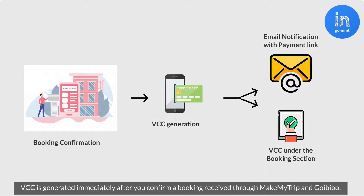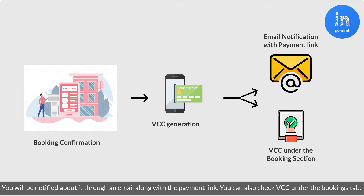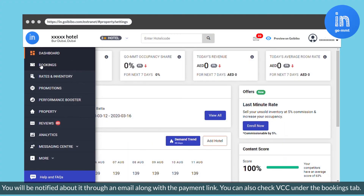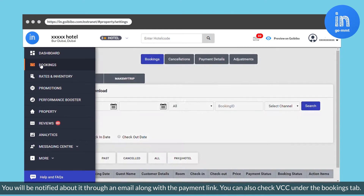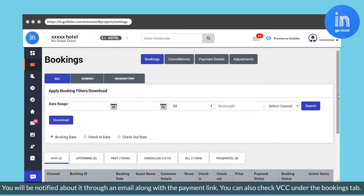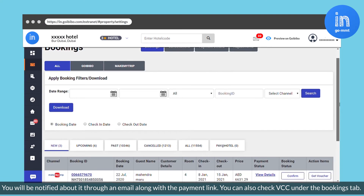VCC is generated immediately after you confirm a booking received through Make My Trip and Go Ibebo. You will be notified about it through an email, along with the payment link. You can also check VCC under the Bookings tab.